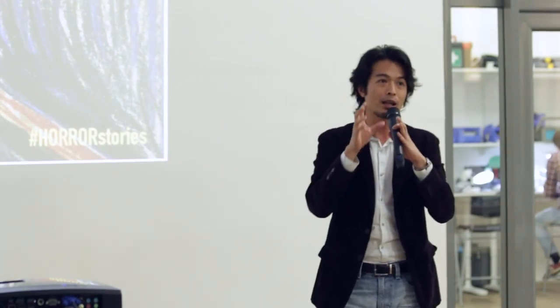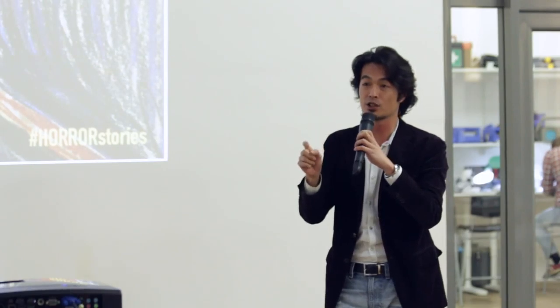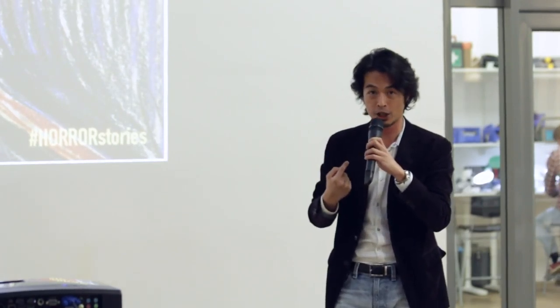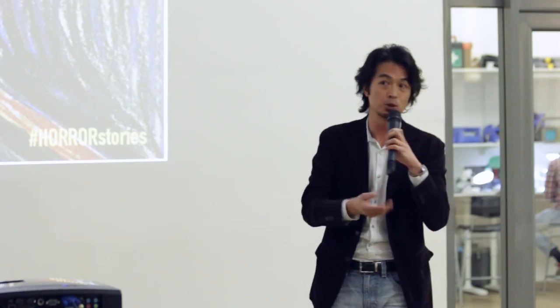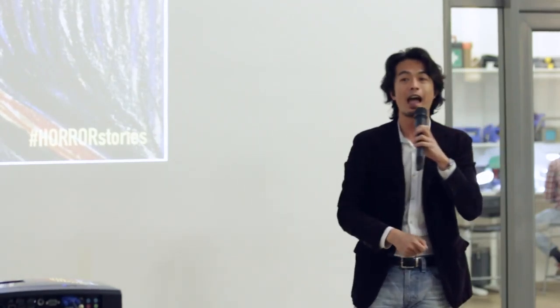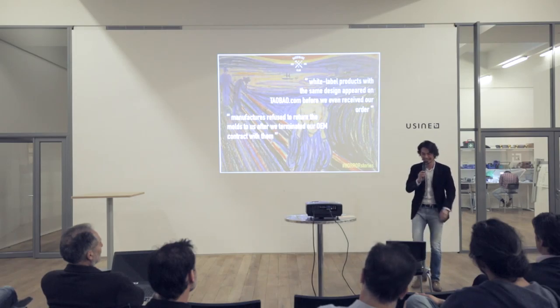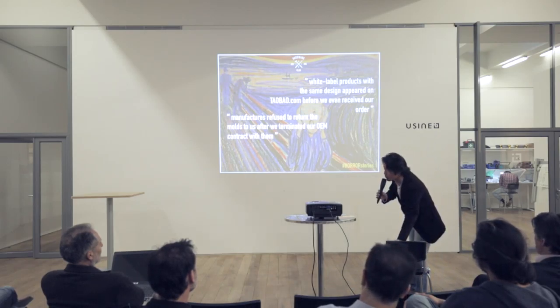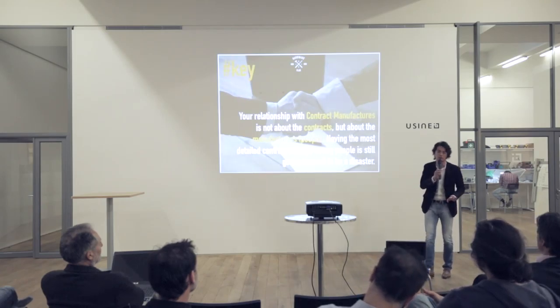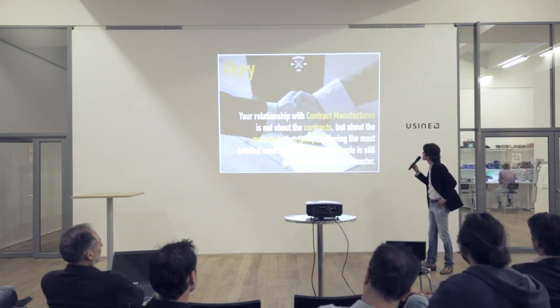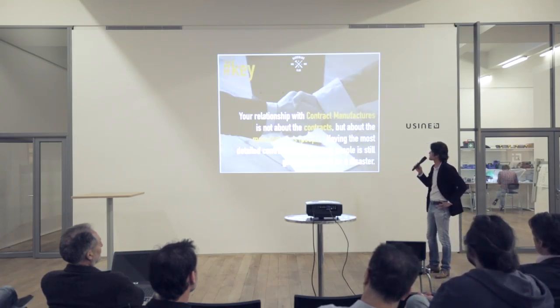Manufacturers also refuse to return the mold when you terminate the contract. The mold is the single most expensive fixed cost you pay when you start manufacturing — you spend a lot of money building the mold that creates your plastic enclosure. When you want to switch manufacturers, you tell them to call off the contract, and the next thing you know, your mold is nowhere to be found. There are law firms that specialize in this, but a contract won't help you if it's somewhere in Dongguan.